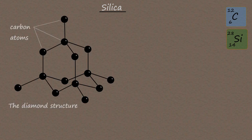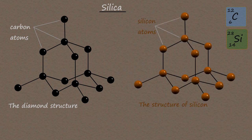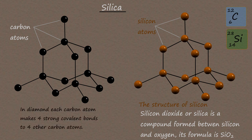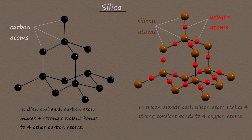Carbon and silicon are two elements found in group 4 of the periodic table. Just as carbon can form giant covalent structures such as diamond, silicon can also form these giant covalent structures. The diagrams shown on screen show the structures of diamond and silicon — these two structures are almost identical. In your science exam you could be asked about the structure of silicon dioxide, often called silica. Silicon dioxide is the main component found in sand and its chemical formula is SiO₂. In diamond, each carbon atom makes four strong covalent bonds to four other carbon atoms.